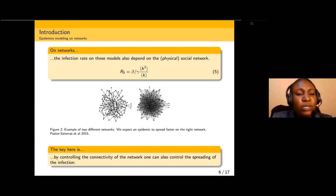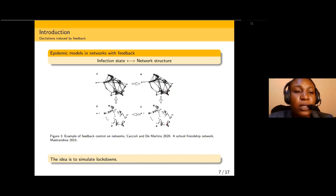By controlling the connectivity of the network, one can also control the spreading of the infection. Once the connectivity of the network is controlled, then the spread of the disease can be controlled.